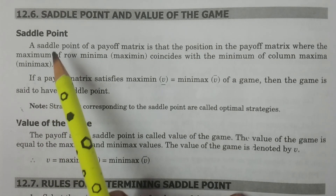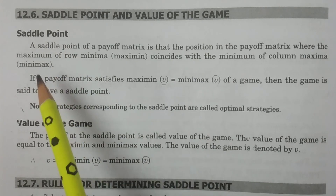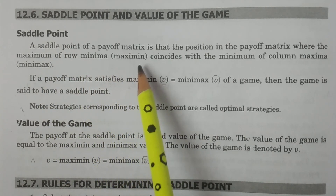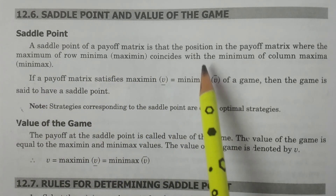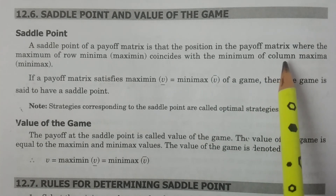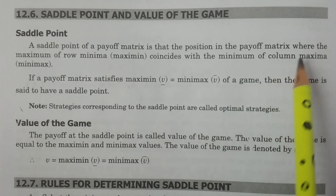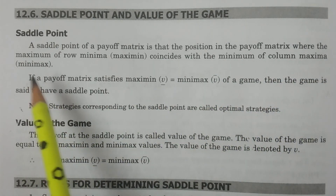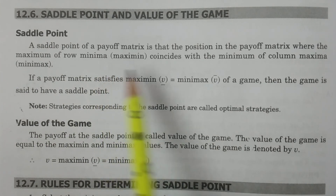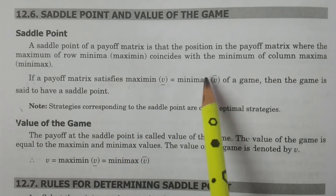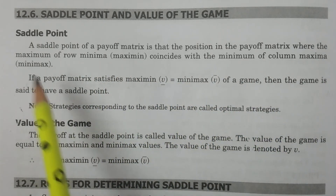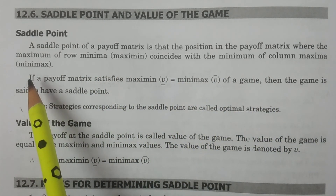The Saddle Point of a payoff matrix is that position in the payoff matrix where the maximum of row minima — that is, maximin — coincides with the minimum of column maxima, that is, minimax.